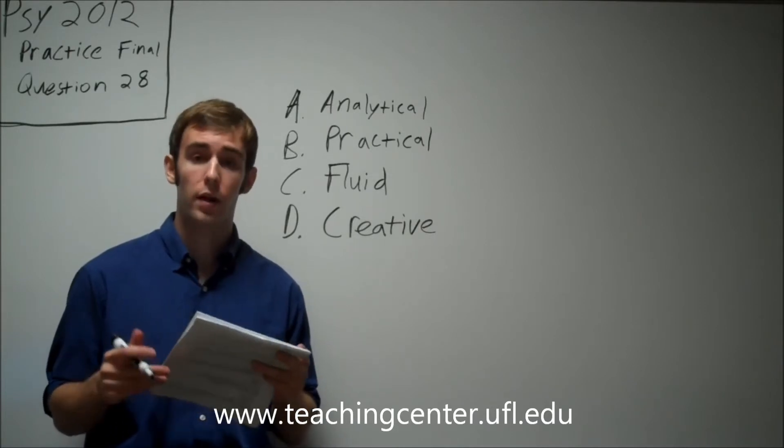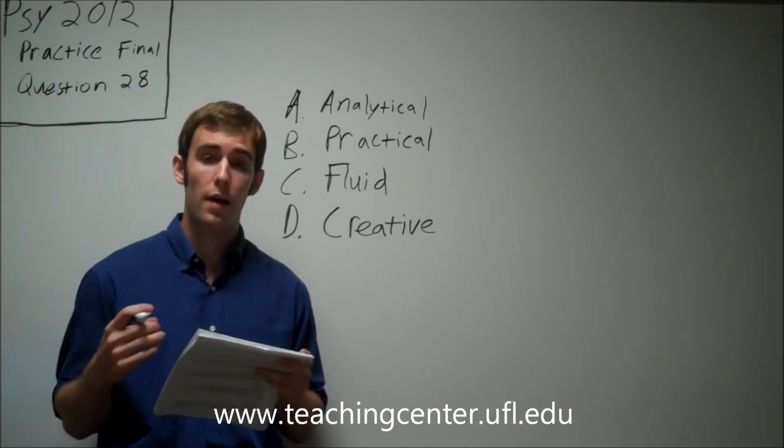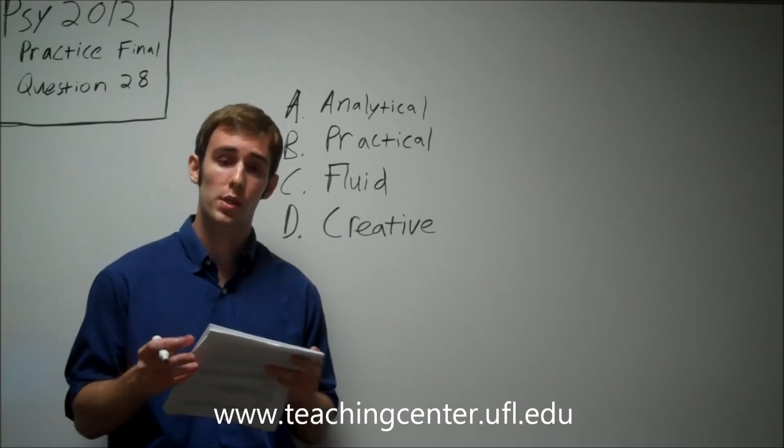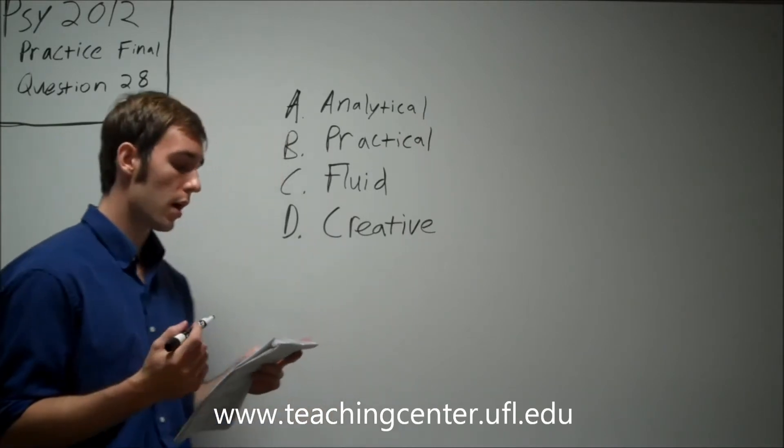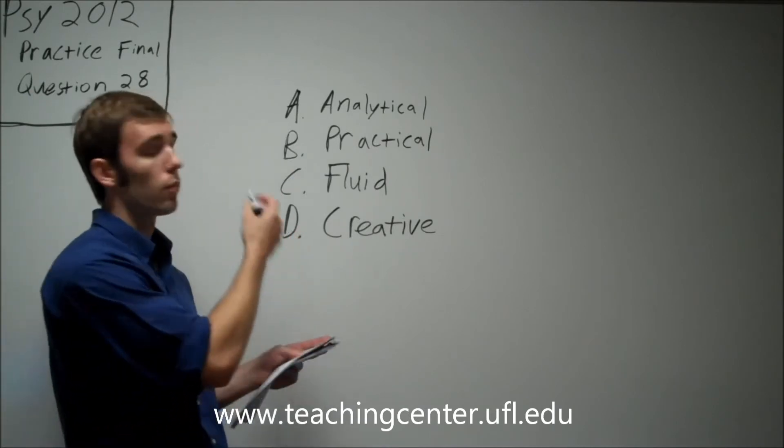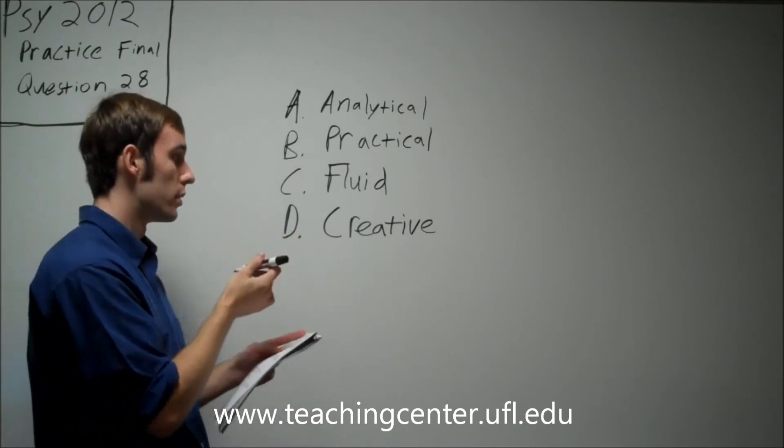According to Sternberg's Triarchic Theory of Intelligence, she will rely mainly on her blank intelligence to figure out what to do. And the options are analytical, practical, fluid, and creative.